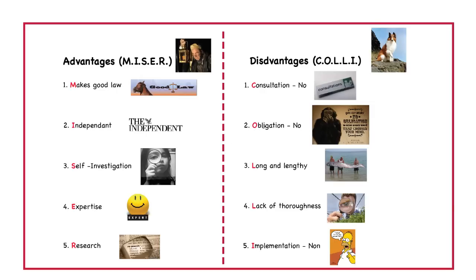The second disadvantage is that the government has no obligation to follow what the Law Commission suggests. The Law Commission may do two or three years of work in a particular area, and if the government doesn't like it or doesn't want to instigate it, it has no obligation to do so. The third is that investigations are lengthy — they take a long time to come to fruition; some can take years, and by that stage a government may have moved on with completely different objectives.